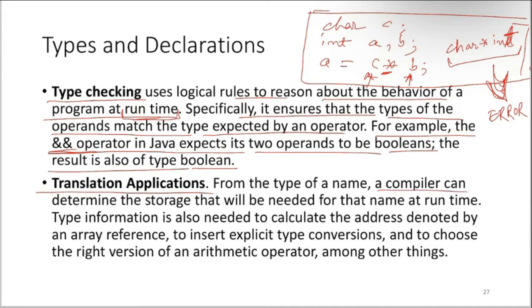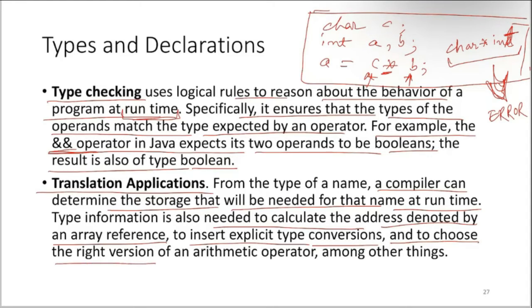A compiler can determine the storage that will be needed for a name at runtime using type information. Type information is also needed to calculate the address denoted by an array reference, to insert explicit type conversions, and to choose the right version of an arithmetic operator among other things.